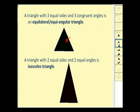A triangle with three equal sides and three congruent angles is an equilateral or equiangular triangle. To show that these have three equal sides we'll often use tick marks — if they all have one tick mark, that shows they're all equal. And the same thing with the angles: if each angle has one arc, we would assume those three angles are congruent.